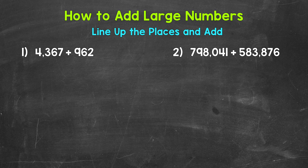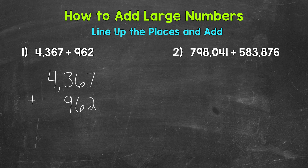Let's jump into number one, where we have 4,367 plus 962. The first thing that we need to do is set this problem up: 4,367 plus 962. When we set up an addition problem, we need to line up the places. In the ones place we have a seven and a two, in the tens place a six and a six, in the hundreds place a three and a nine, and in the thousands place a four — only the top number goes to the thousands place.